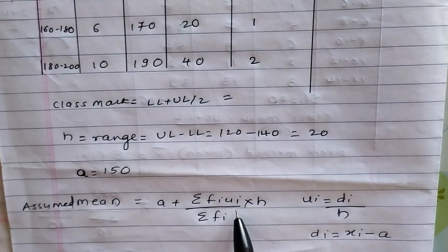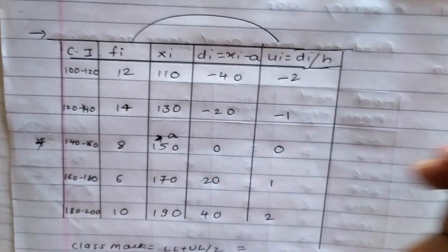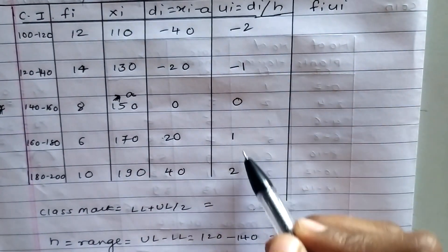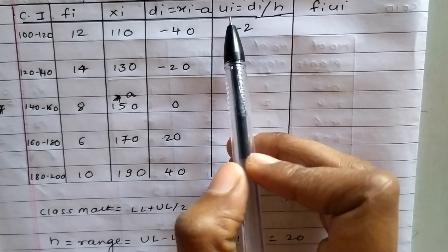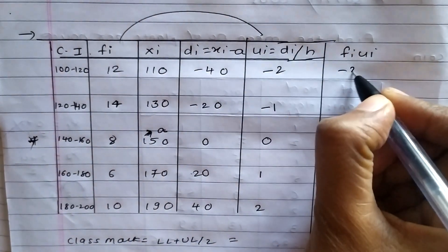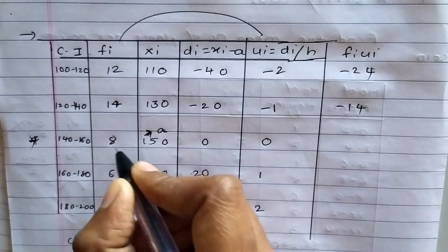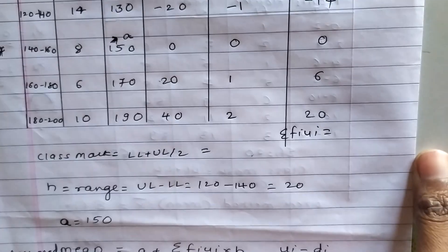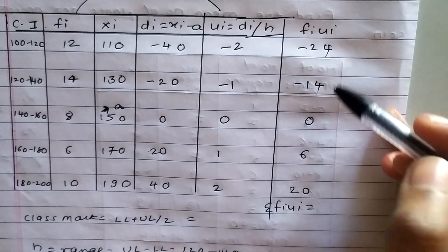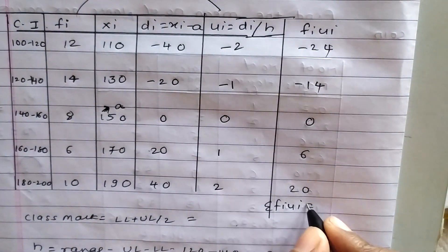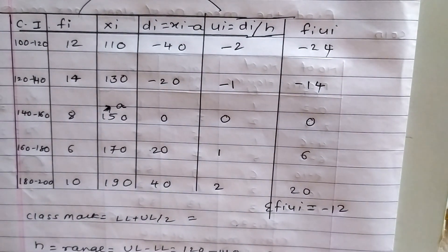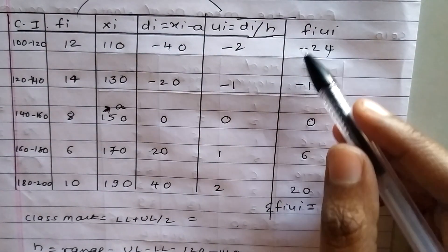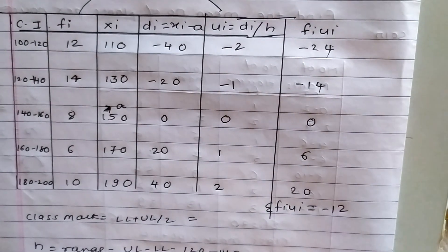Now we have FI and UI, so we multiply them to get FI into UI, then find the summation. 12 times minus 2 gives minus 24; 14 times minus 1 gives minus 14; 8 times 0 gives 0; 6 times 1 gives 6; 10 times 2 gives 20. Adding with attention to signs, the negatives sum to minus 38 and positives sum to 26, giving summation of FI into UI equals minus 12.